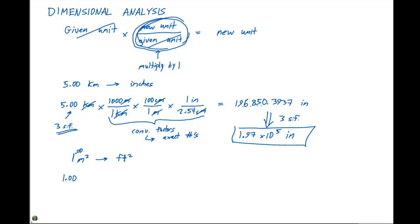Starting with 1.00 meters squared, I'll write this out in longhand: meters times meters, which is meters squared. That's our given unit, and we need to go from meters squared to feet squared.